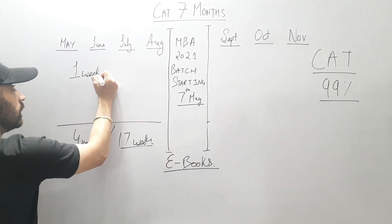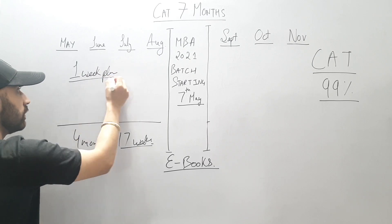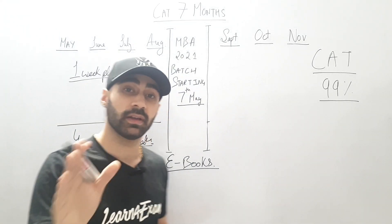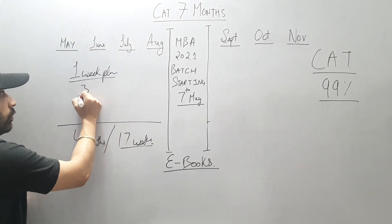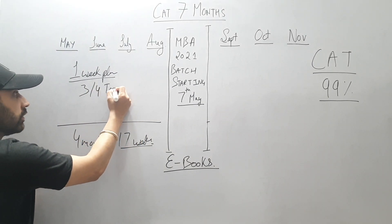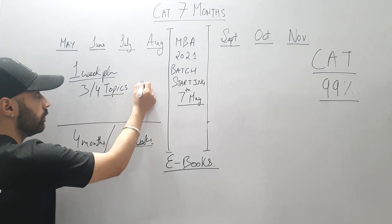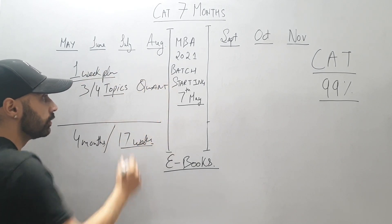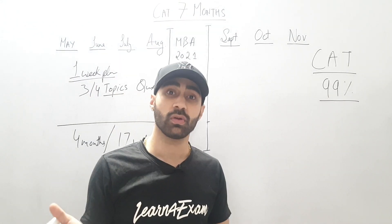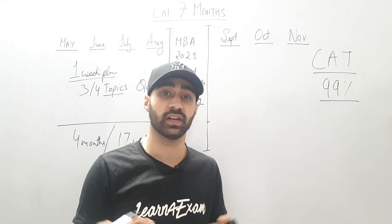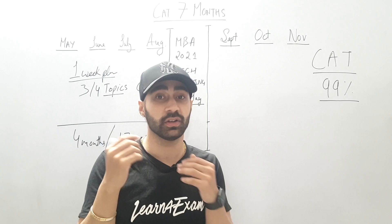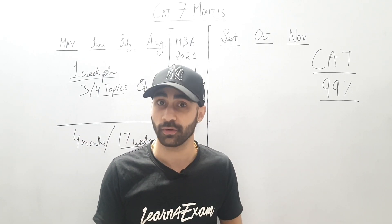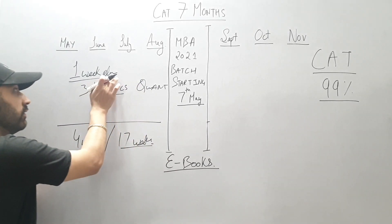Now how do I divide these 17 weeks? Make a one-week plan — a device plan — which you can make yourself accordingly. In a one-week plan, you will have to do three or four topics every week from Quant. Sometimes you may be busy, have functions, classes, or a job — there are n number of excuses.